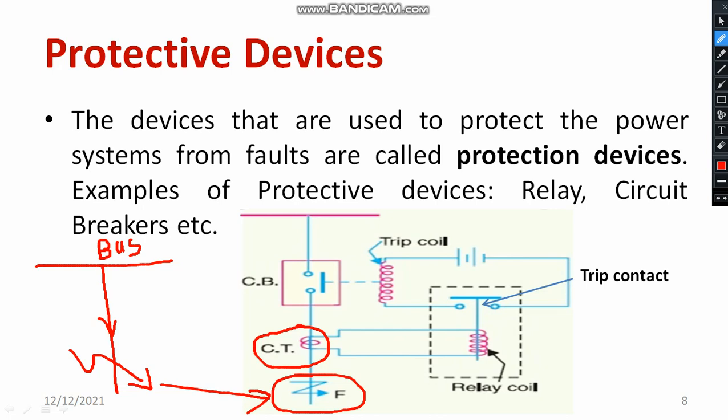The current transformer is connected in series to the conductor and detects the excess of current. That signal is directly connected to the relay coil. If the current exceeds a certain preset value, the relay coil gets energized. Once the relay coil is energized, the tripping contact closes.